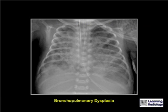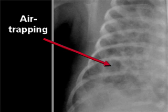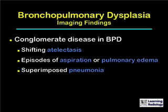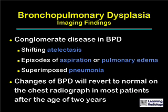This is an example of bronchopulmonary dysplasia. The lucent area represents air trapping, and the dense area represents fibrosis or atelectasis. Imaging findings in bronchopulmonary dysplasia can also include conglomerate disease, which can represent atelectasis, episodes of aspiration or pulmonary edema, or superimposed pneumonia.